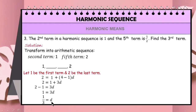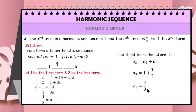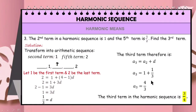We can now determine the third term by adding the common difference, which is 1/3, to 1, the second term. The third term therefore is a_2 + d, which is 1 plus 1/3 equals 4/3. So the third term of this arithmetic sequence is 4/3. Therefore, the third term in the harmonic sequence is 3/4, the reciprocal of 4/3.